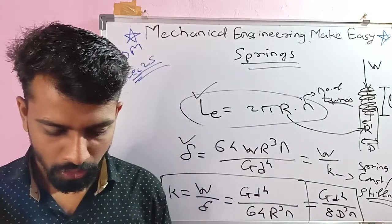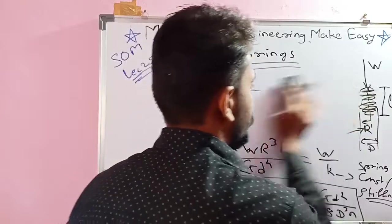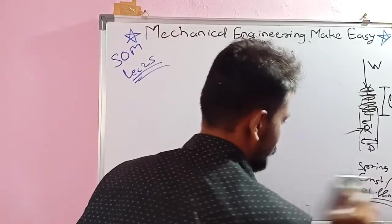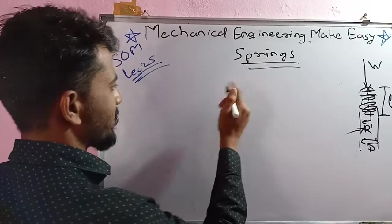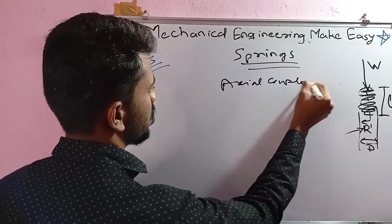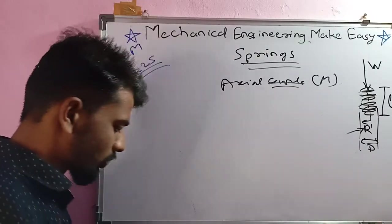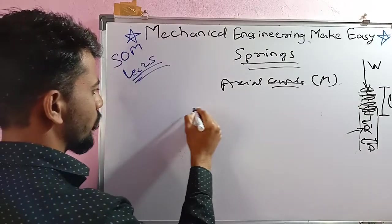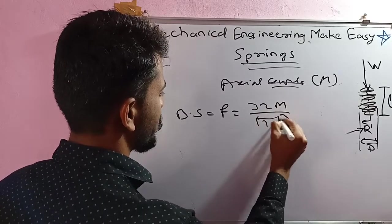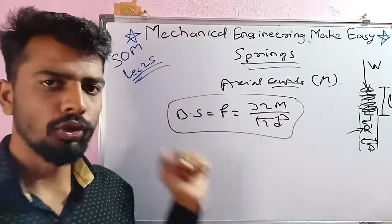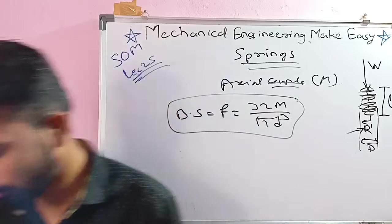One more formula: if the closed coil helical spring is subjected to an axial couple (moment M), then bending stress develops. The bending stress f = 32M divided by π d³. This is the bending stress formula when a closed coil helical spring is subjected to an axial couple. That concludes all formulas for closed coil helical spring.